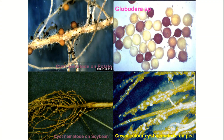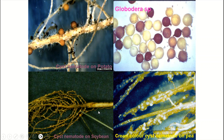Here you can see cysts of Globodera species — these are cyst nematodes on potato, known as the golden potato cyst nematode. There are also cyst nematodes on pea. Here you can see cyst nematodes on soybean — note the bright yellow cysts visible on the soybean root system.